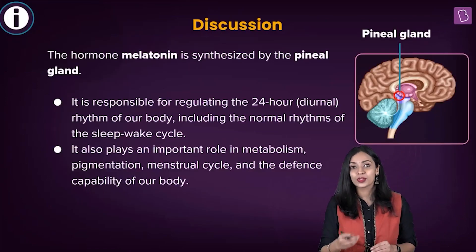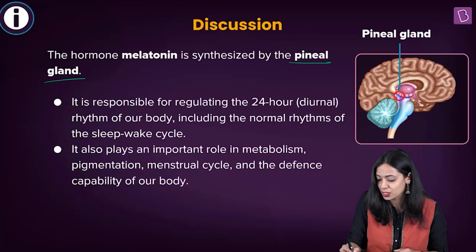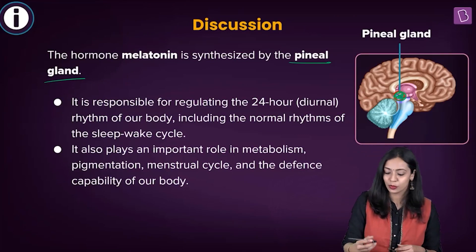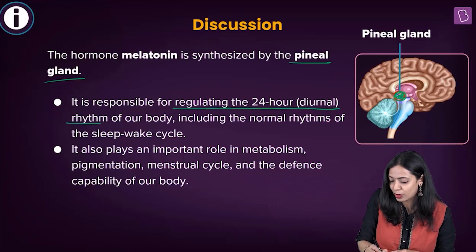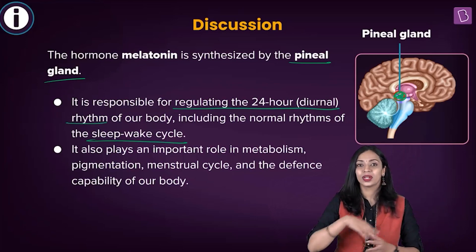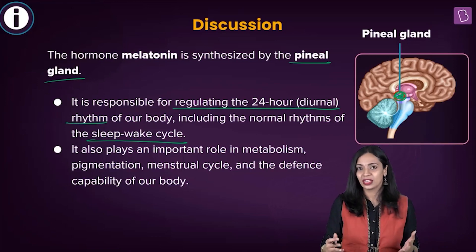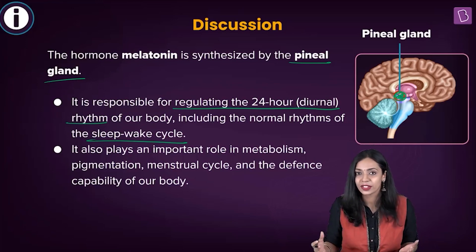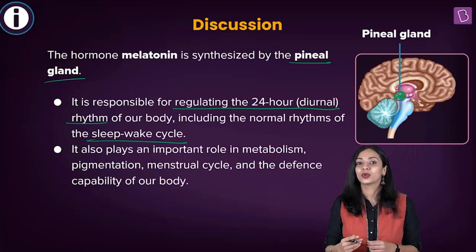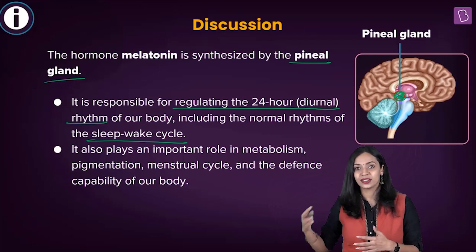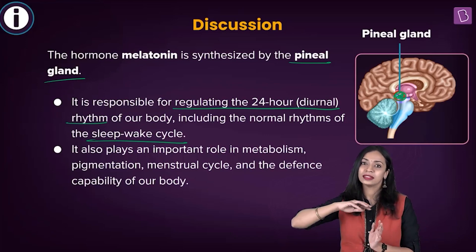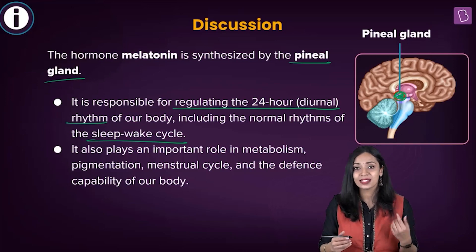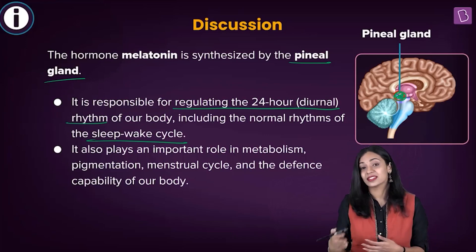The hormone melatonin is produced by the pineal gland, located in the dorsal part of our forebrain. Its functions include regulating the diurnal rhythm of our body, including the sleep-wake cycle. In a 24-hour day, we generally spend about 8 hours in sleep. Melatonin is also known as the hormone of darkness because it's produced only during the dark — towards late evening, melatonin production gets stimulated, putting us in a sleepy mood.